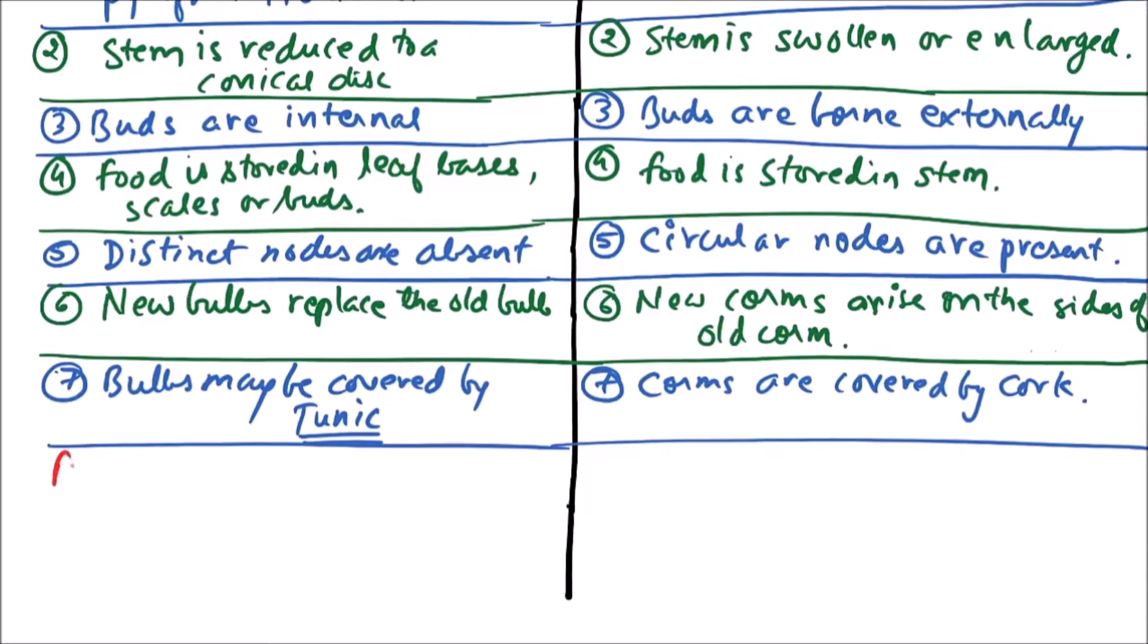Now the examples. Examples of bulbs can be classified into two categories: tunicated bulbs and non-tunicated bulbs.